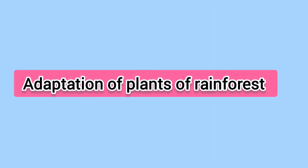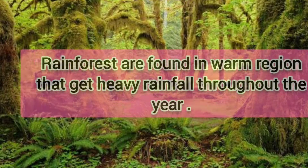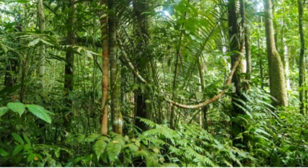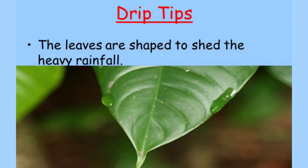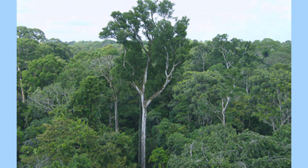Adaptation in plants of rainforest: Rainforests are found in warm regions that get heavy rains throughout the year. In these areas, most plants have smooth stems which allow water to quickly flow towards the ground. The leaves have a waxy surface and drip tip to get enough sunlight. Trees in the rainforest grow very tall.